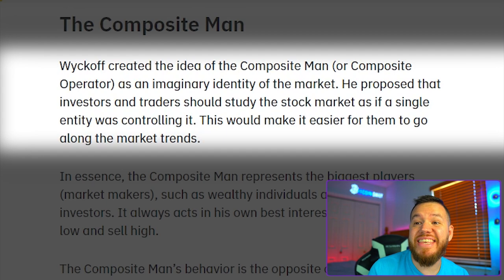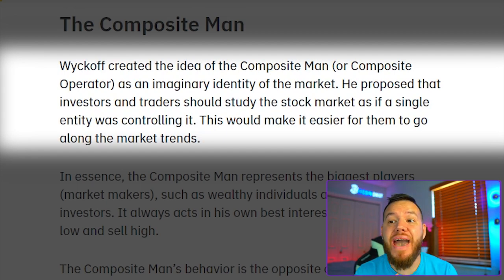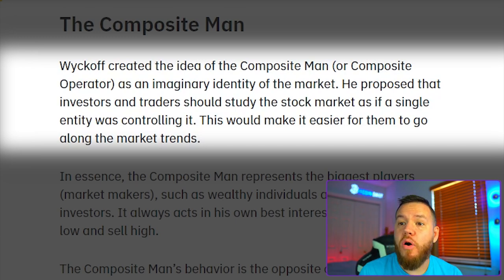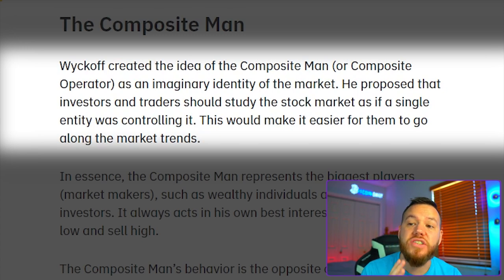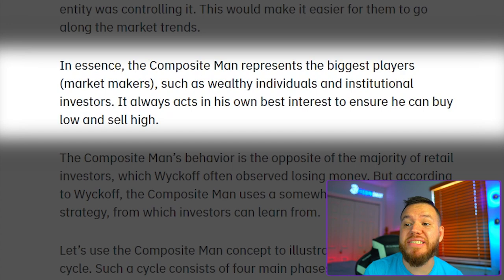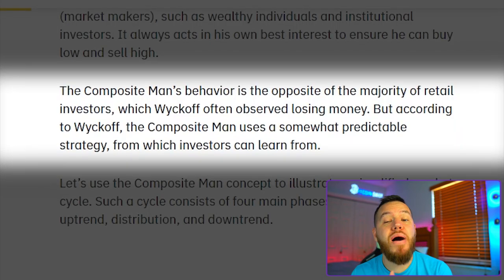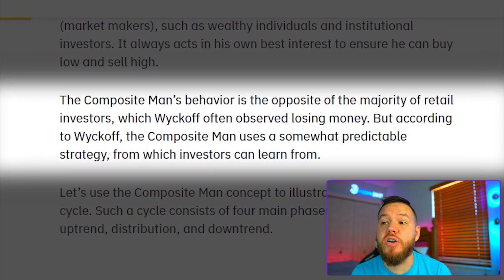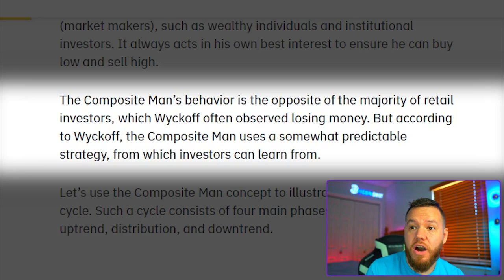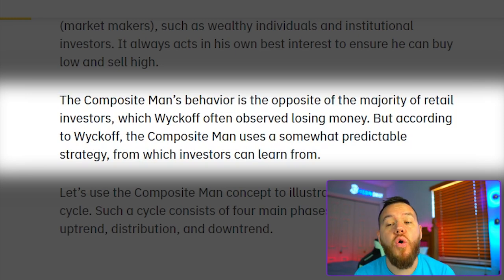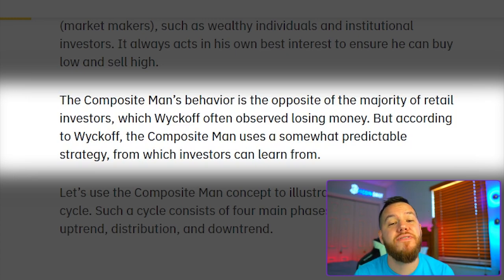Next, let's talk about the composite man concept. Wyckoff created the idea of the composite man as an imaginary identity of the market. He proposed that investors and traders should study the stock market as if a single entity were controlling it. In essence, the composite man represents the biggest players and market makers — such as wealthy individuals and institutional investors. The composite man's behavior is the opposite of the majority of retail investors, which Wyckoff often observed losing money. But according to Wyckoff, the composite man uses a somewhat predictable strategy that investors can learn from.